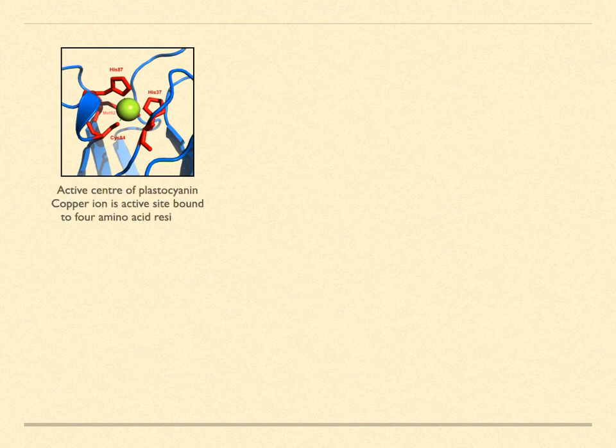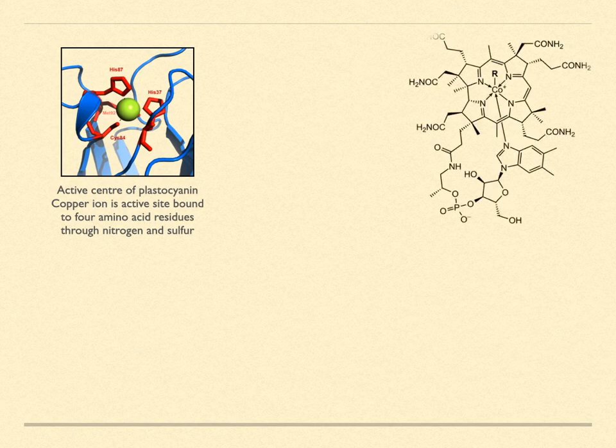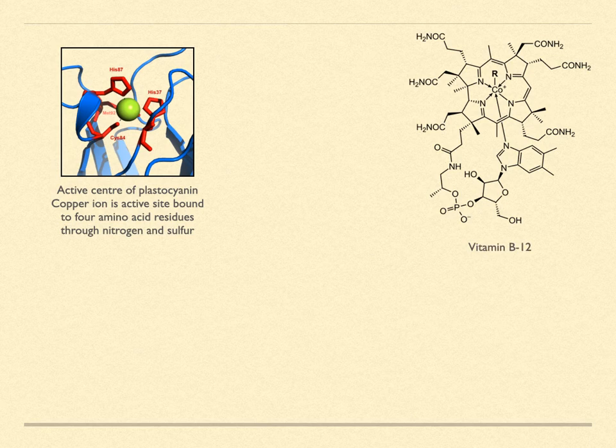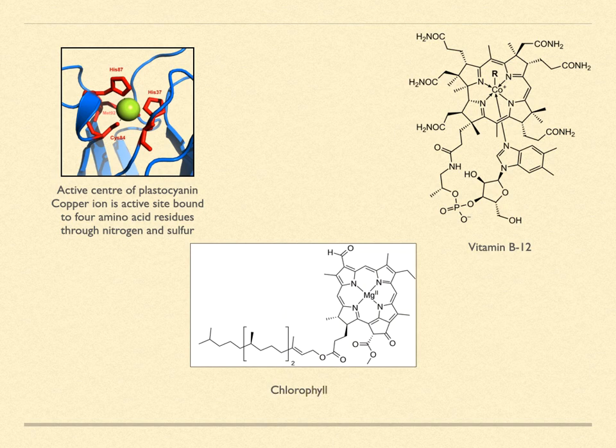Plastocyanin is an enzyme in plants for transporting electrons. It uses copper as an active center and is bound through four amino acid residues. Vitamin B12 is the largest and most complex vitamin. It has a cobalt ion bound to five nitrogen atoms with a sixth bond to various R groups, depending upon its current state. Chlorophyll is an enzyme that chelates a magnesium ion. It is key in harvesting light to produce electrons for chemical processes in plants.